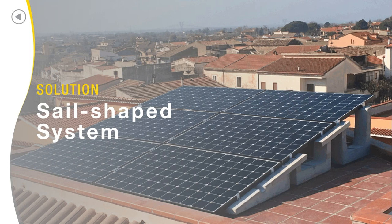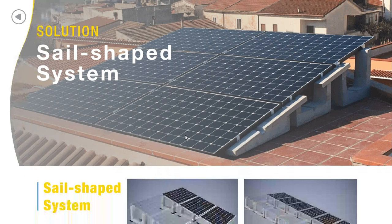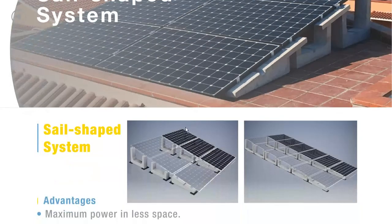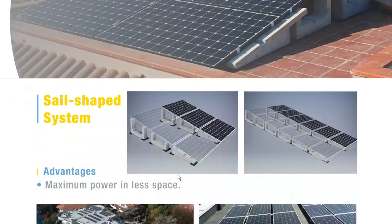At Sun Ballast, the sail-shaped system is patented. It is an excellent solution for space problems, and we have two types. On the left image, we see the sail-shaped system at 11 degrees, which allows horizontal laying of the panels up to 3 rows. On the right image, we see the sail at 5 degrees inclination, which allows horizontal laying up to 6 rows.